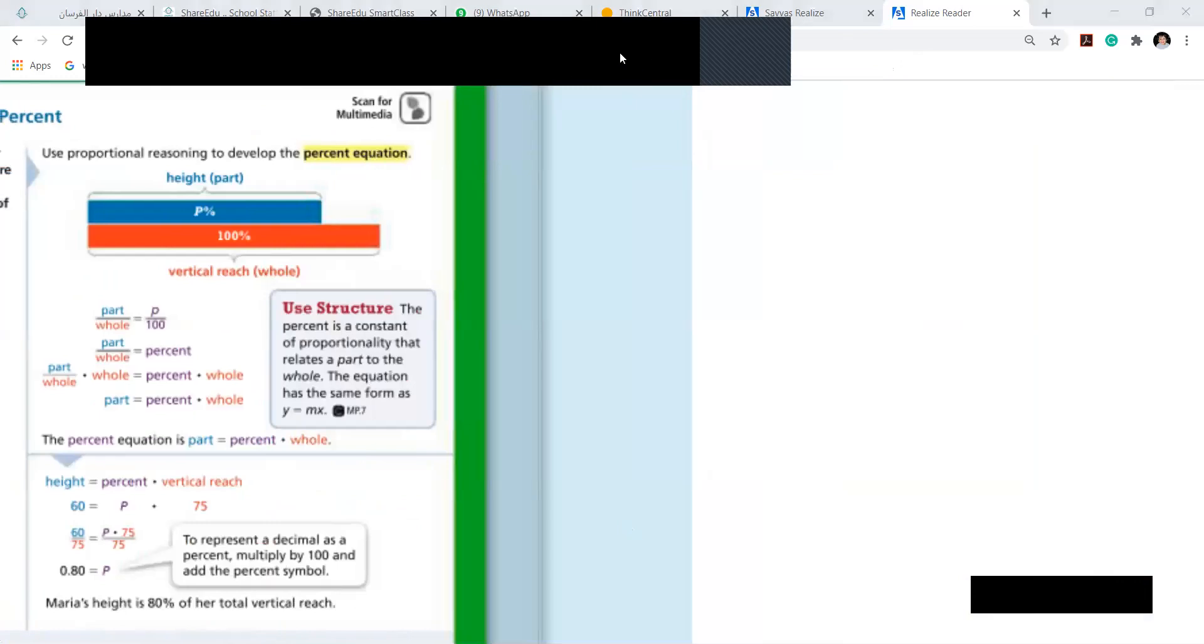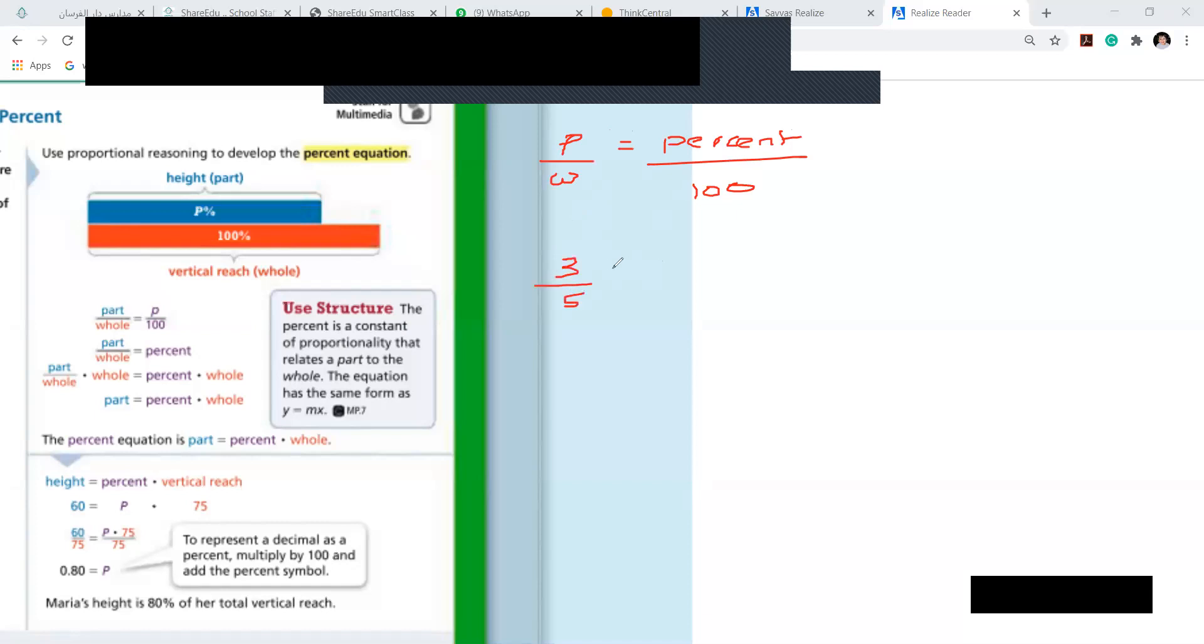Girls, last lesson, what did I teach you? I taught you a formula: it was part by whole equals percent by hundred, remember? Like, I have 3 out of 5 marks, how much percent did I get? So what I used to do, I used to send this hundred that side: 3 over 5 times 100, and I got my answer as 60 percent. This is what we were doing in the last lesson. We wrote part by whole equals percent.